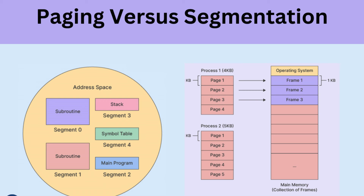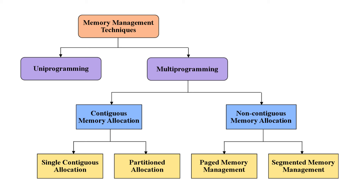Virtual memory extends physical memory by using disk space to simulate additional RAM, enabling the execution of large applications and multitasking by swapping data between RAM and disk as needed. Memory partitioning can be either static or dynamic: static partitioning divides memory into fixed sizes at startup, while dynamic partitioning adjusts sections based on process needs, improving memory utilization. The buddy system is another technique, splitting memory into power-of-two-sized blocks to minimize fragmentation and manage free space efficiently.